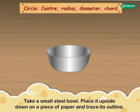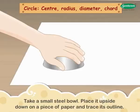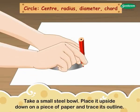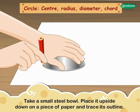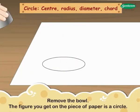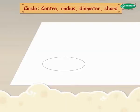Take a small steel bowl, place it upside down on a piece of paper and trace its outline. Remove the bowl. The figure you get on the piece of paper is a circle.